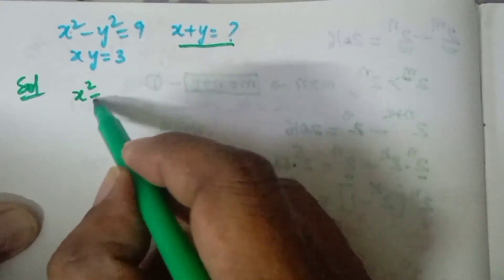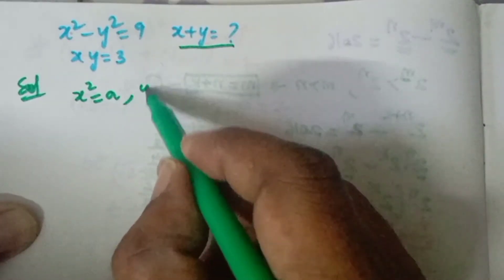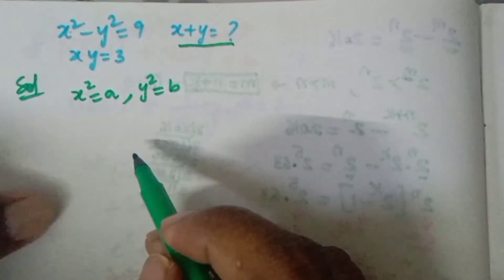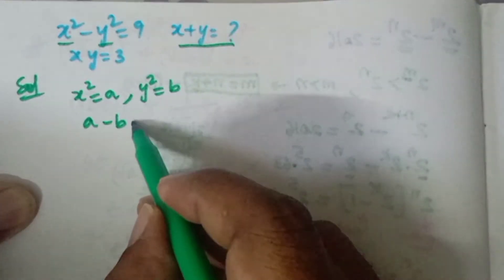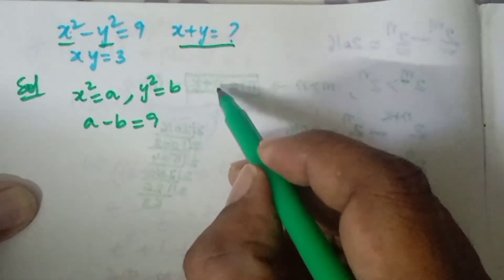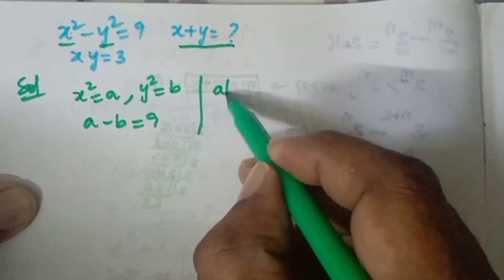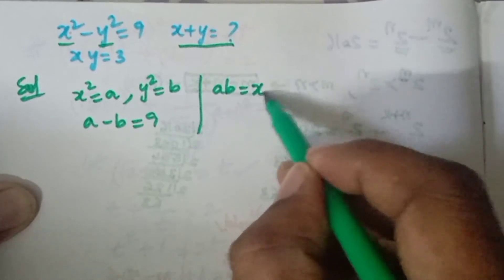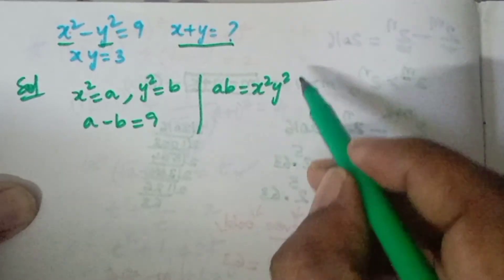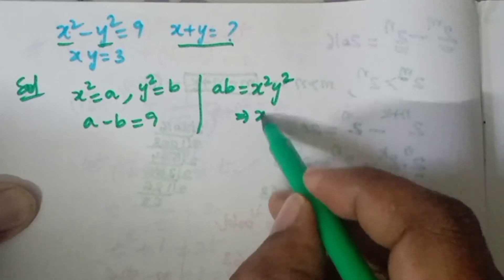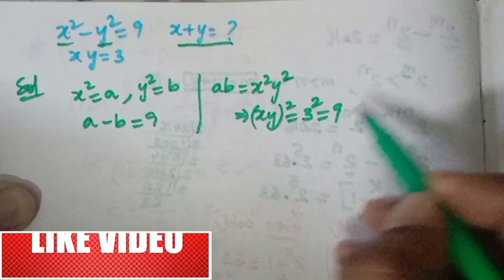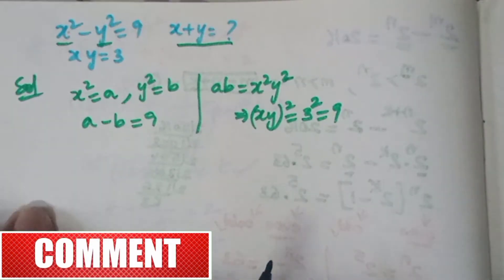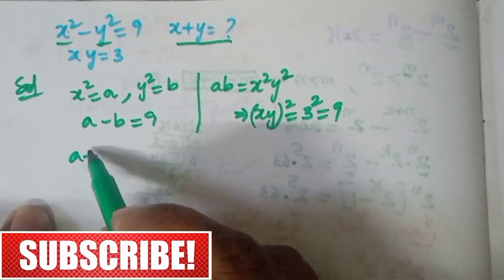For the solution, let us first take x squared equal to a and y squared equal to b. Substituting the values, we get a minus b is equal to 9. Now if we multiply, ab equals x squared times y squared, which is nothing but xy whole squared, that is 3 squared, which gives us 9.